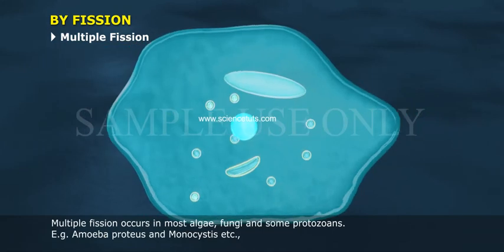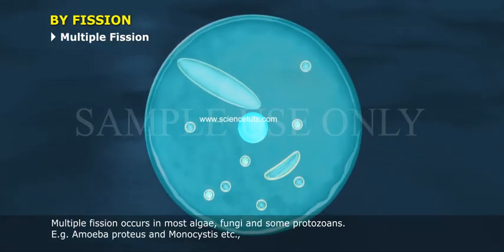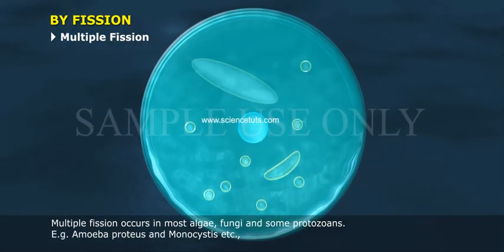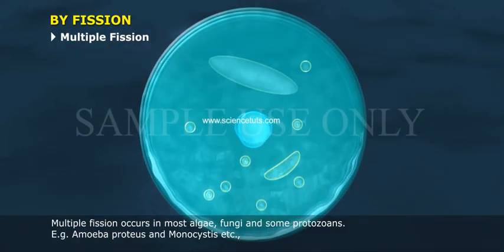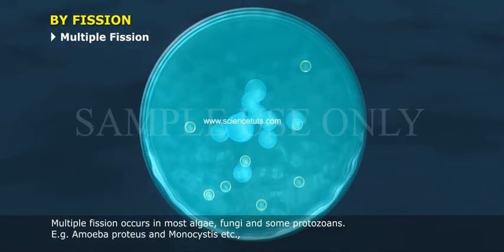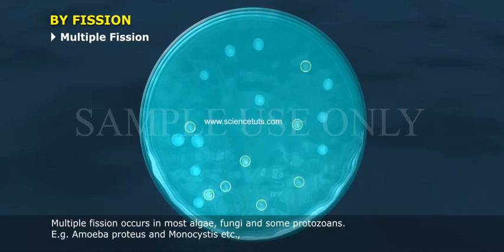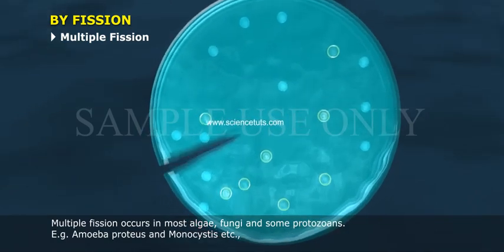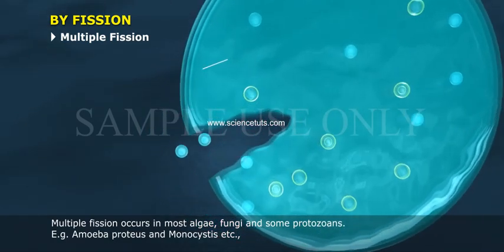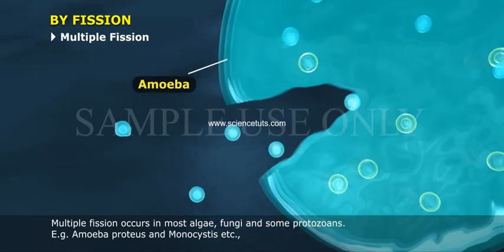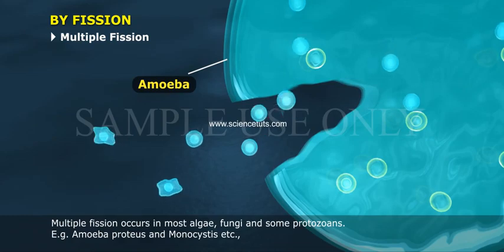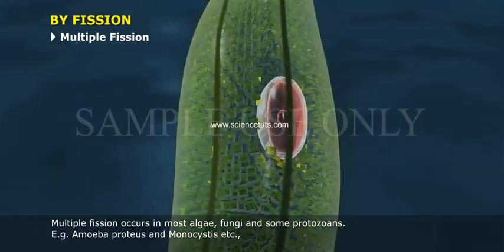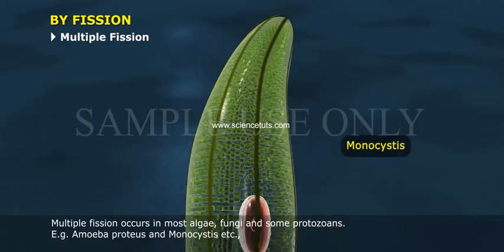Multiple fission occurs in most algae, fungi, and some protozoans. Examples include Amoeba, protozoa, and Monocystis, etc.